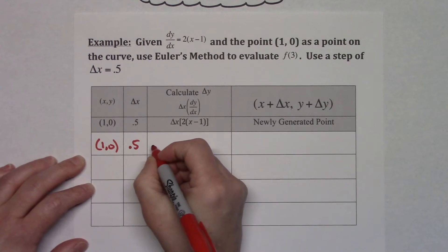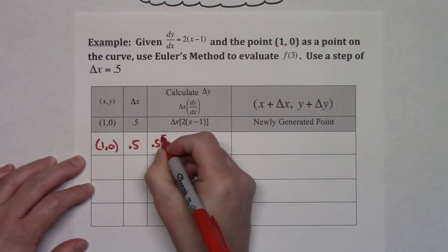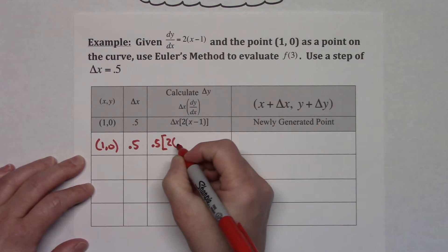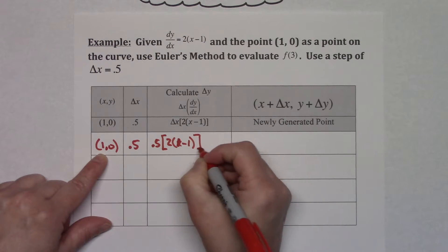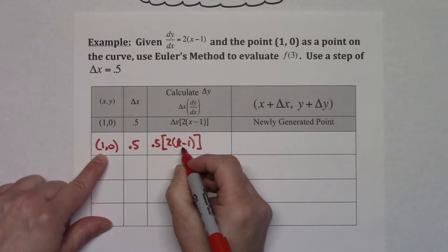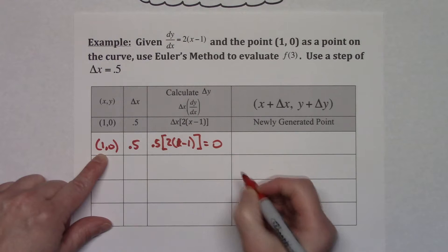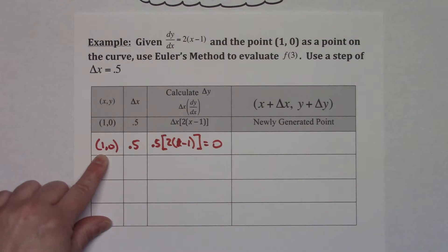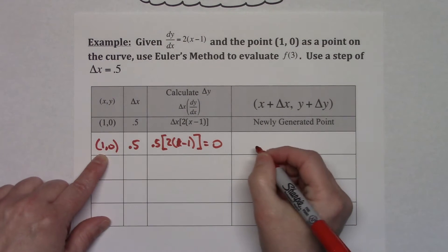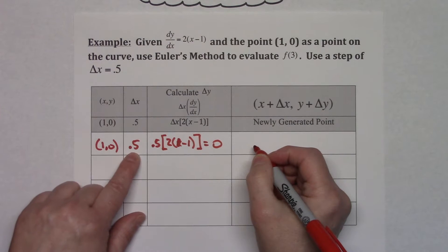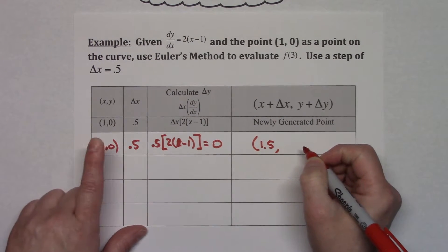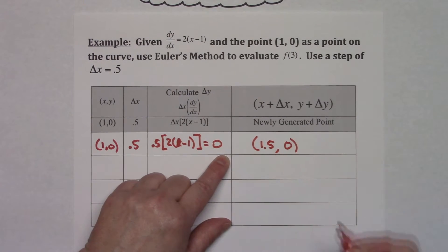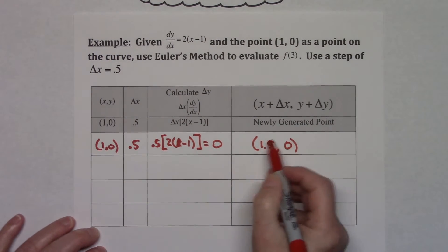Now I'm going to do some math here. I'll have 0.5 times 2 times (1 minus 1) — that's going to be 0, so the whole thing is going to be 0. My delta y in this first iteration is 0. Coming over here generating my new point: 1 plus 0.5 gives me 1.5, and 0 plus 0 gives me 0, so my new point is (1.5, 0).